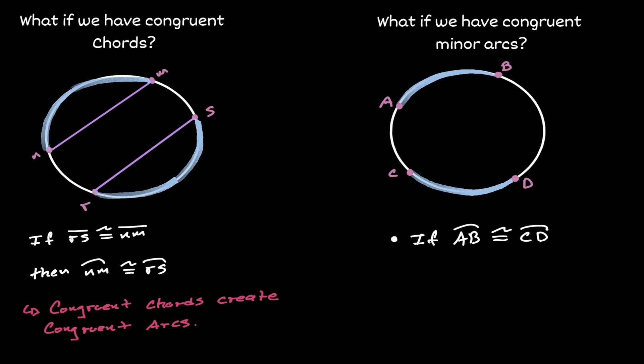Then if we connect the starting point and the ending point of each of those arcs to create chords, we can conclude that those two chords are congruent to each other. Congruent arcs create congruent chords.